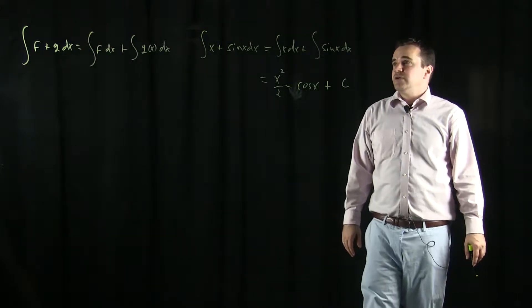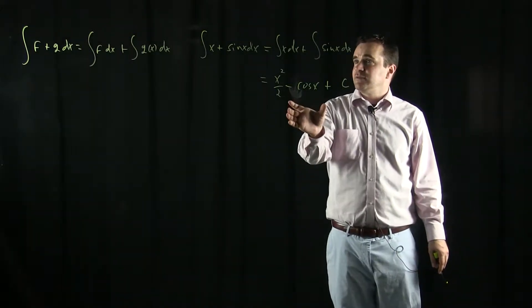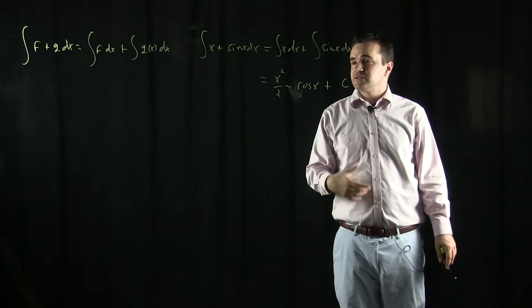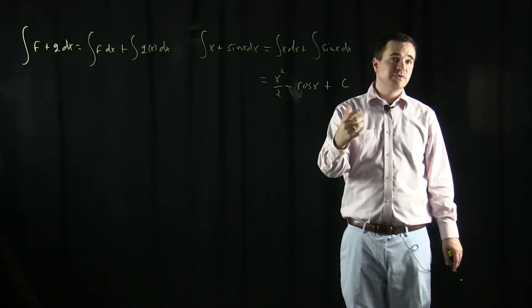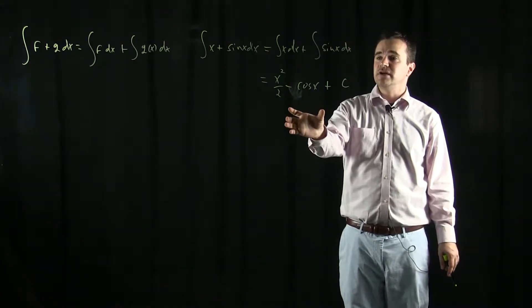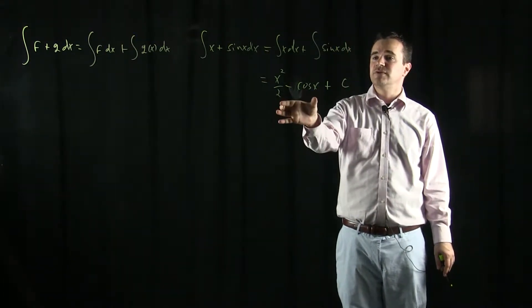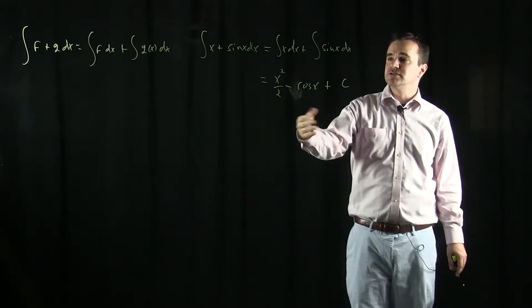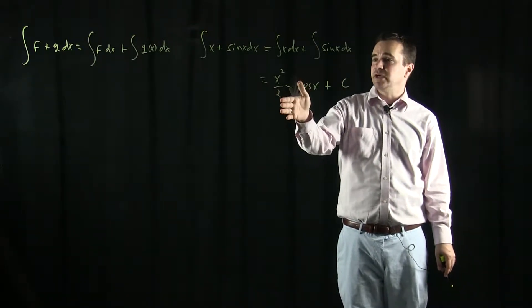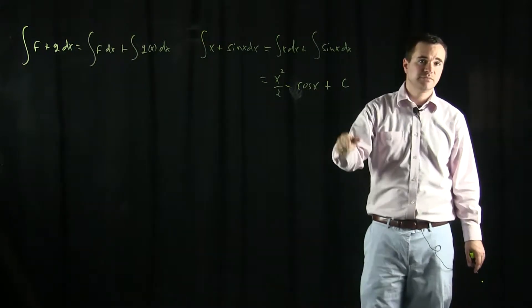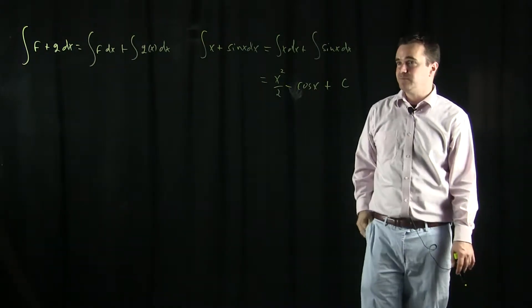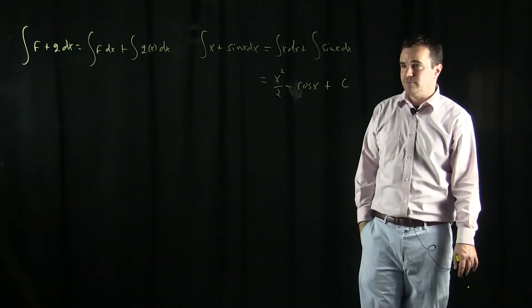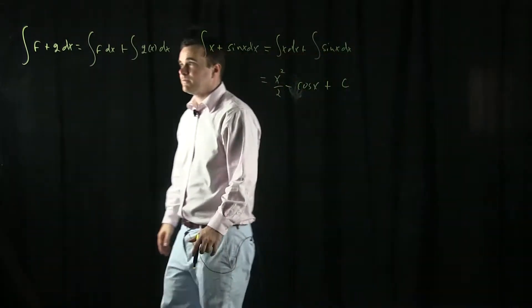So is this going to be an anti-derivative for x + sin(x)? Yes, because the derivative is linear — I can take the derivative of this by taking the derivative of each term, giving myself x + sin(x) + 0. So that works out.